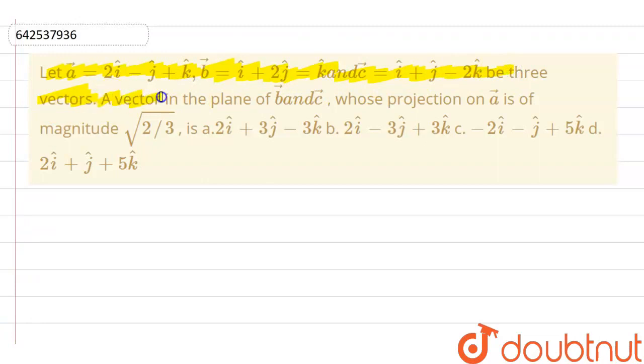A vector in the plane of b and c whose projection on a is of magnitude square root of 2 by 3, and we have 4 options with us. So we need to find that vector.